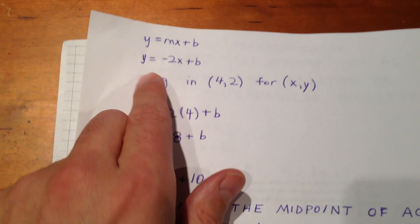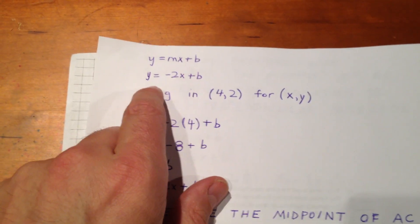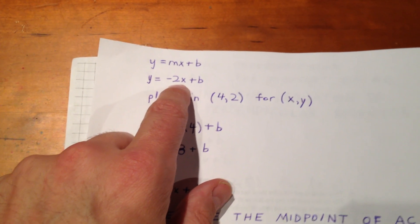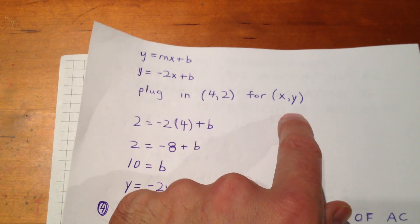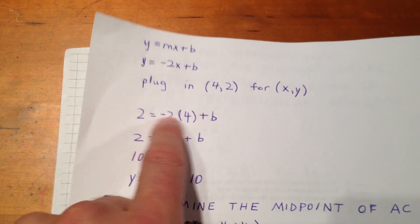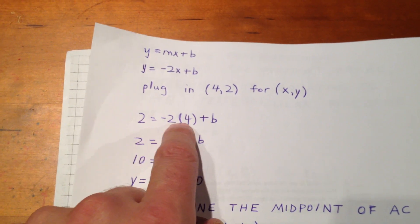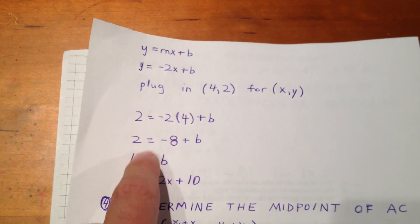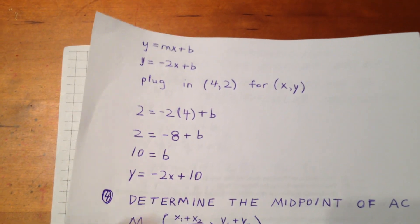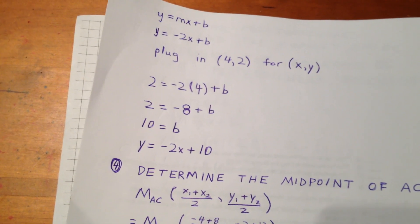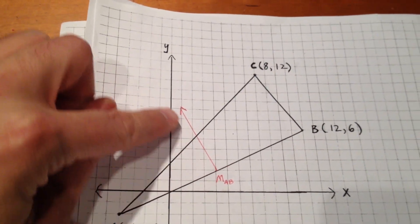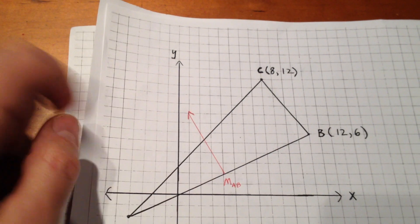We know that y equals mx plus b. In this case, y equals -2x plus b. We plug in (4, 2) for x and y: 2 equals -2 times 4 plus b, so b equals 10. Therefore, y equals -2x plus 10 is the equation of the first perpendicular bisector.